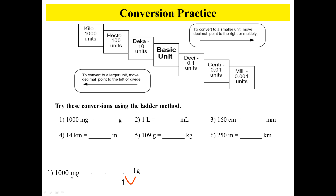The last example will show you how to convert 1,000 milligrams to grams. So again, we determine our starting point — milli. Where's milli? Way over here, right? Milli is our starting point and grams is our ending point. So how many jumps? Three jumps again — one, two, three. And we put in zeros in the missing places, so it's 0.001 grams.